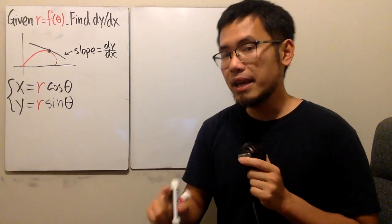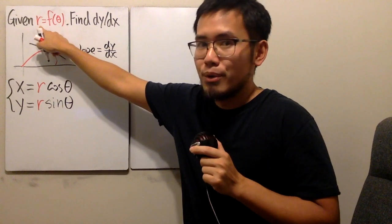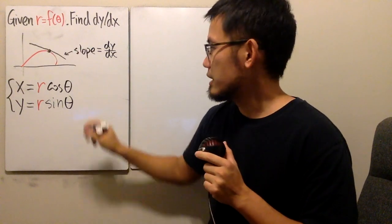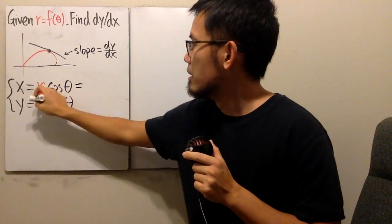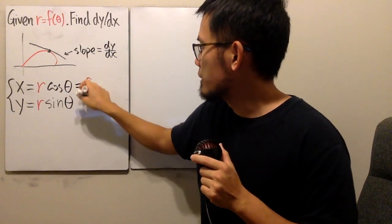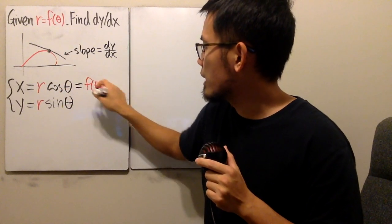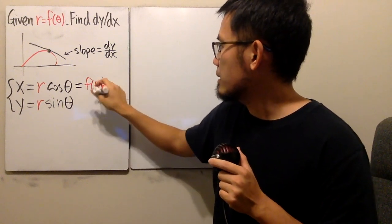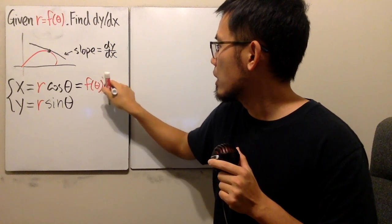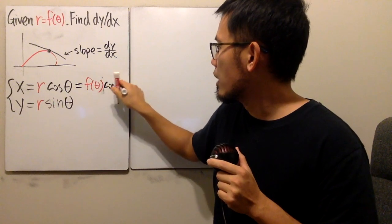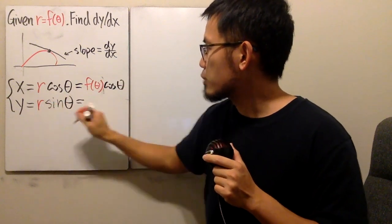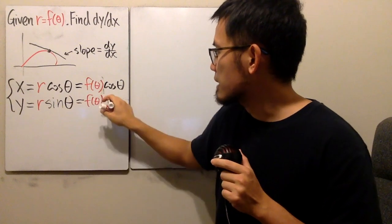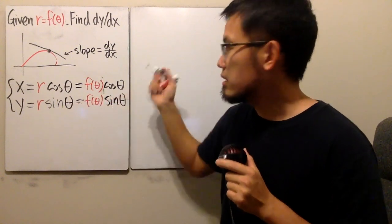In this case, r is not just a number — r is a function of theta. So x becomes f of theta times cosine theta, and y becomes f of theta times sine theta.